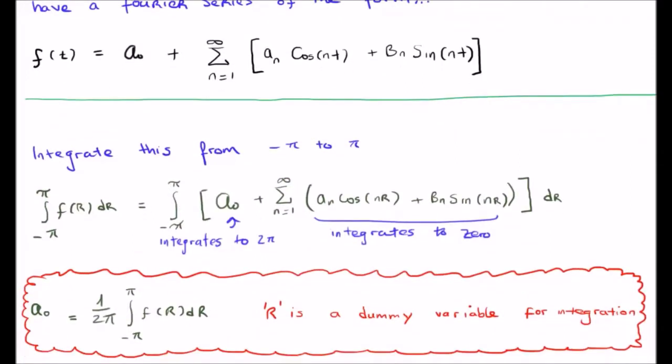In order to derive the a sub 0 term, we multiply the Fourier series here by 1 and we integrate from minus pi to pi. So I've done that here. Now, well, I haven't really done it. I've more shown how it's done.